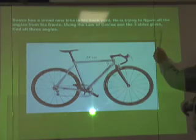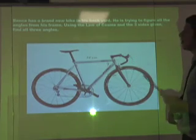Ben said he has a brand new bike in his backyard. He's trying to figure out all the angles from his frame using the law of cosines. Three sides given, all three angles. Keep in mind this is a miniature bike, a small little bike. That's why it is in centimeters. It's a funky bike.